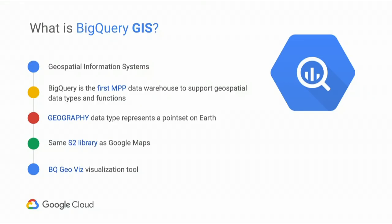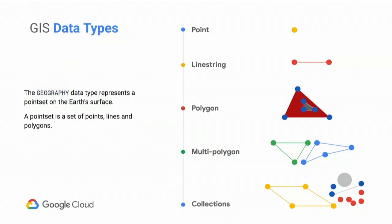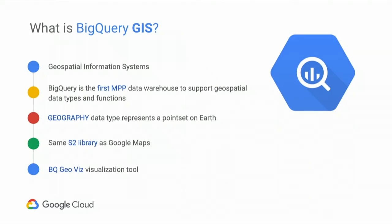We have the concept of a geography data type, and that's essentially a point set on the Earth's surface. When you combine that with your location data in your BigQuery table — for example, if you have longitude, latitude, or country codes — you can derive really powerful insight and it makes your data a lot more relatable. Underpinning this all is the same library used in Google Maps. We also have the BigQuery Geo Visualization tool, which is a lightweight tool that allows you to view your analysis against a live map.